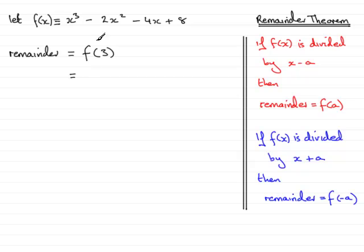That means we just substitute x as 3 in here, so we've got 3 cubed minus 2 times 3 squared minus 4 times 3 plus 8. And working that out, you find that you get 5. So the remainder is 5.